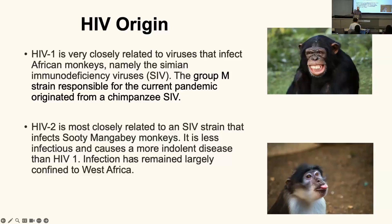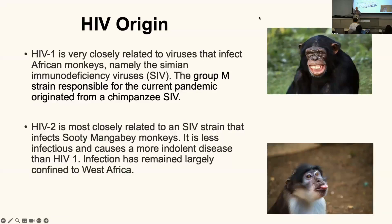HIV-2 is another SIV, from the sooty mangabey. There are some great stories about the early work of virus hunters developing this connection to SIV. There's a Patient Zero podcast from Radiolab that talks about Beatrice Hahn, a famous HIV investigator at UPenn. Her early work involved standing underneath chimpanzee nests in Africa at night, holding a cup out and waiting for droppings, then taking them to the lab to do viral analysis. That's a pretty interesting extent of field work.